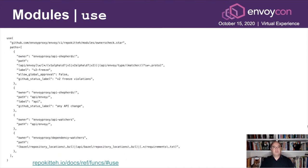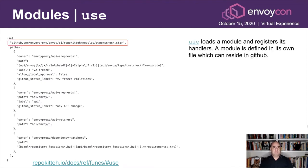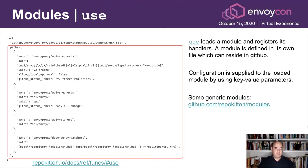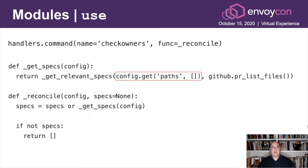This is an example of the use statement. The use statement is used to load a module that is defined in RepoKitten, or you can write a module yourself. First, you specify the path for the module that you want to load. It needs to be residing in a private or public repository, as long as the application has permission to access it. This configuration can be supplied to the module once loaded. The module will accept this configuration on every event handler. Some generic modules are supplied as part of RepoKitten. It's actually being supplied to the reconcile method, which is registered using handler's command, so when slash check-owners is typed into a comment, reconcile is called with the config argument.